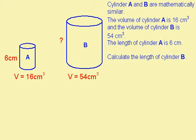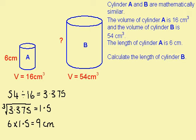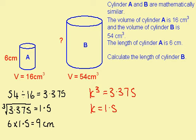Here's a question for you to try. Press pause and have a go at it. When you're ready for the answer, press play. The first thing to do on this question is to find the ratio of the volumes. This is 54 divided by 16, which is 3.375, and this gives us k³. We now want to find k, so we need to find the cube root of 3.375 using our calculator. This gives us 1.5. I now know that this length is 1.5 times this length here. 6 times 1.5 gives me a final answer of 9 cm.